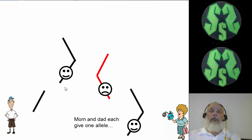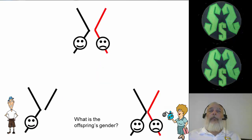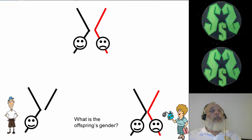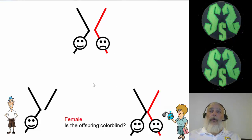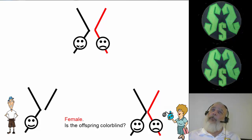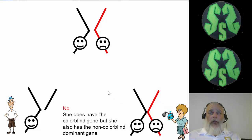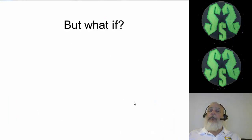What if dad gives the X chromosome and mom gives that colorblind X chromosome? First of all, this is going to be a girl — XX. Is this girl going to be colorblind? She does have the one colorblind gene, but remember that's recessive and she has one normal color sight gene which is dominant. So this girl is not going to be colorblind — she'll see color normally. However, she is still going to be a carrier, so she can pass it on to her children.